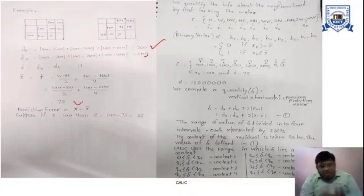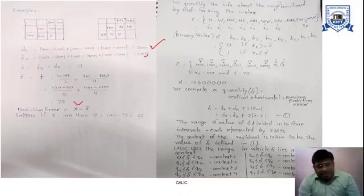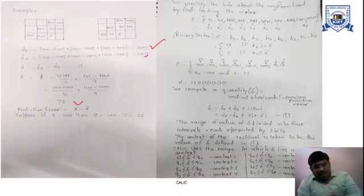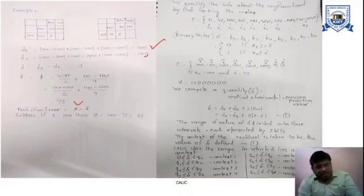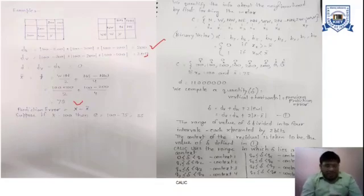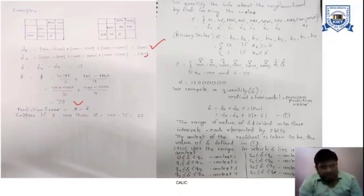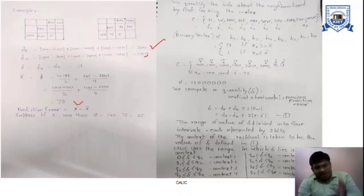On the basis of that value, we calculate the prediction error. We have predicted a value — suppose the actual value of X is 100 and the calculated X-bar is 75. The prediction error is calculated by the formula X minus X-bar, which is 100 minus 75, giving a prediction error of 25.